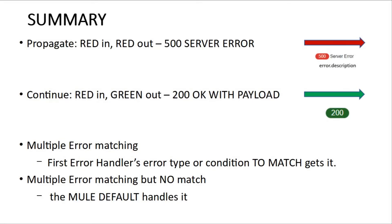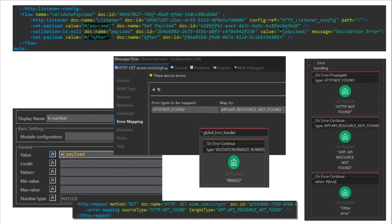To summarize: OnErrorPropagate — red in, red out — this is associated with 500 Server Error and the error message. If there are multiple error handlers, the first type-matching error handler handles the situation. If there are multiple error handlers and no matches are found, it will be handled by the Mule default, which means propagate on error with status code 500 and an error message. Also, if the diagram shows anything extra — like other XML or specific settings — this is a clue that something has been changed from the default and you should not expect default behavior. Good luck!